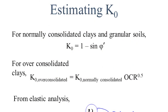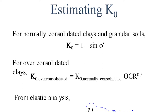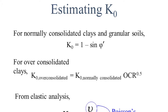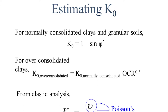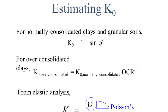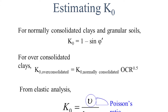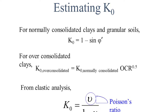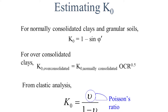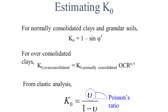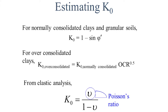For normally consolidated clays and granular soils, K0 is equal to 1 minus sin phi dash, where phi dash is the effective interganular friction angle. For over-consolidated clays, K0 equals K0 (normally consolidated) multiplied by OCR — the over-consolidation ratio — to the power of root of OCR. For elastic analysis, K0 is equal to nu divided by (1 minus nu), where nu is Poisson's ratio.